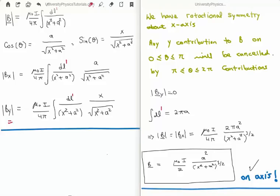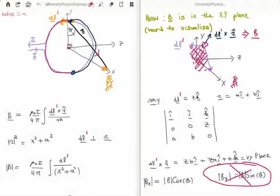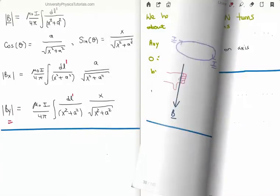The integral of DL prime simply gives us two pi times the radius — the circumference of the circle. So the magnitude of the magnetic field is just its x component: mu zero i over 4pi, multiplied by two pi a squared over (x squared plus a squared) to the 3/2. This simplifies to mu zero i over 2, times a squared divided by (x squared plus a squared) to the 3/2. Importantly, this is the field measured on axis — perpendicular to the centre of the circle. It will be different if the detector is placed off axis.